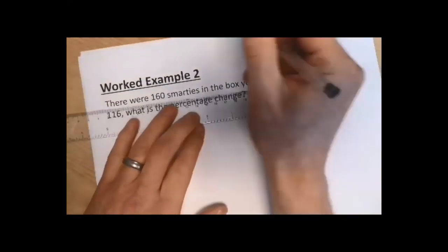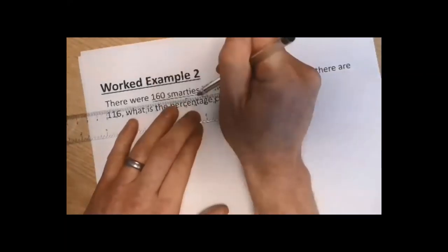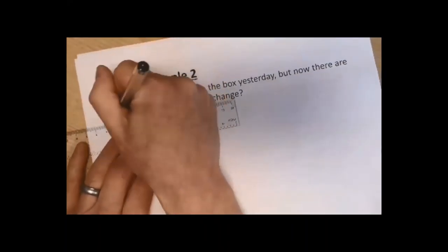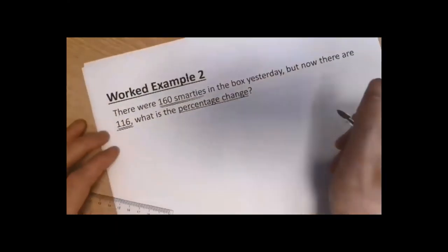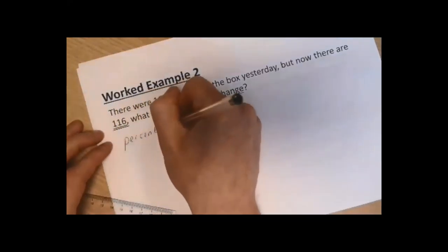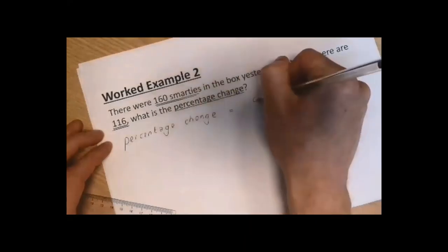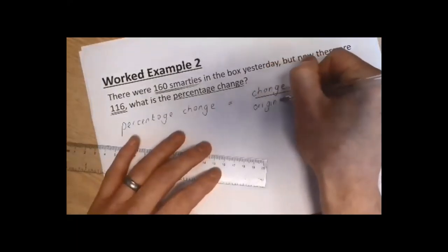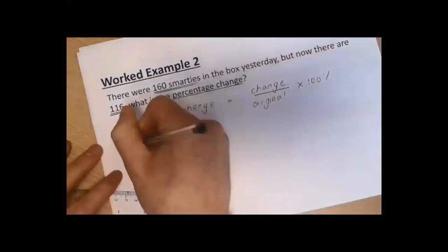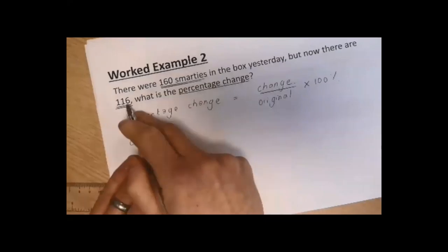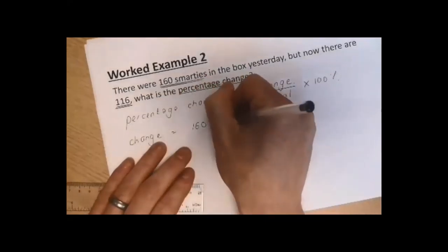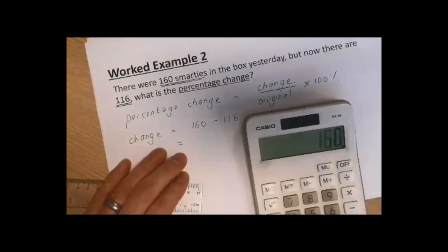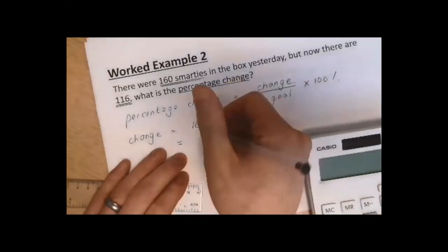Second worked example. There were 160 Smarties in the box yesterday; now there are 116. The equation: percentage change equals the change divided by the original, or start number, times by 100. The change in the number of Smarties is the big number take away the small number: 160 minus 116 equals 44.